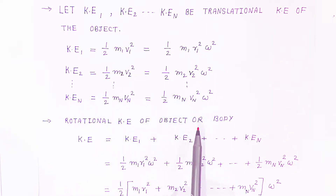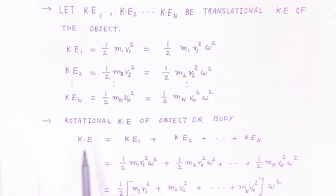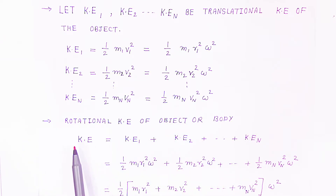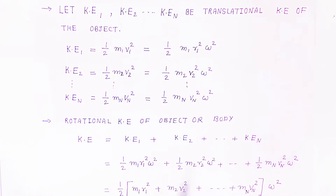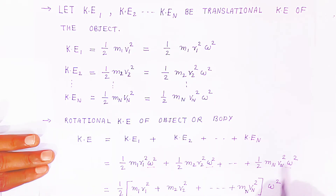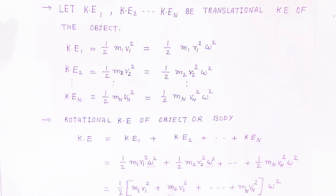The rotational kinetic energy of the whole object is the sum of the kinetic energy of every particle. So the total rotational kinetic energy equals KE1 + KE2 + ... + KEn. Substituting the values: half m1 r1 squared omega squared plus half m2 r2 squared omega squared plus ... plus half mn rn squared omega squared. Taking half and omega squared as common factors from all terms, we get: half omega squared times (m1 r1 squared + m2 r2 squared + ... + mn rn squared).